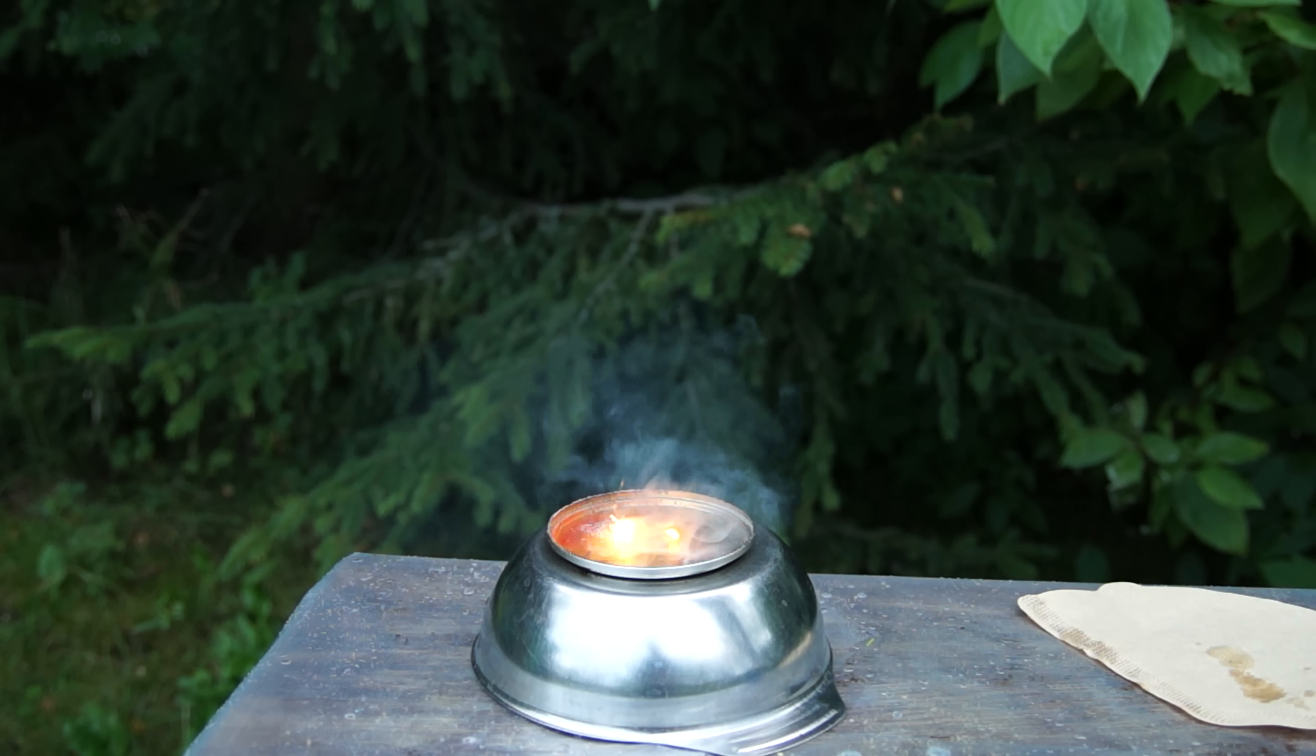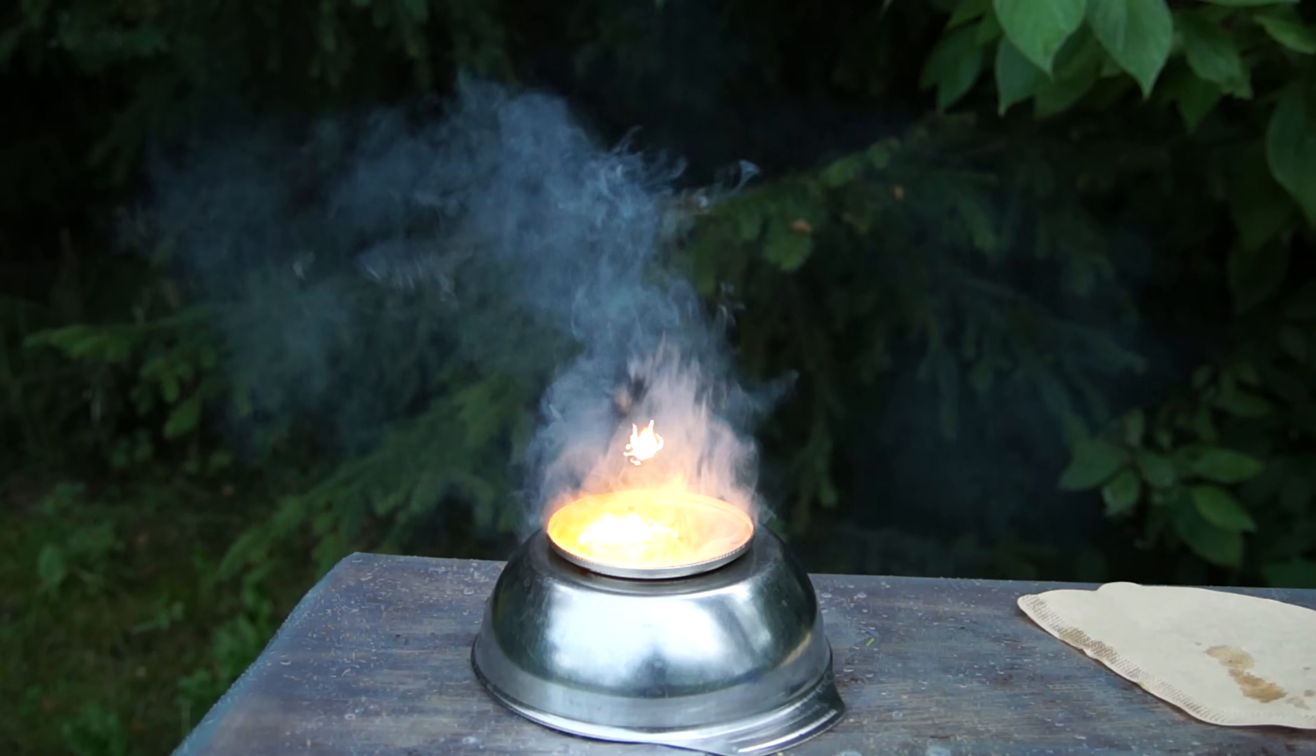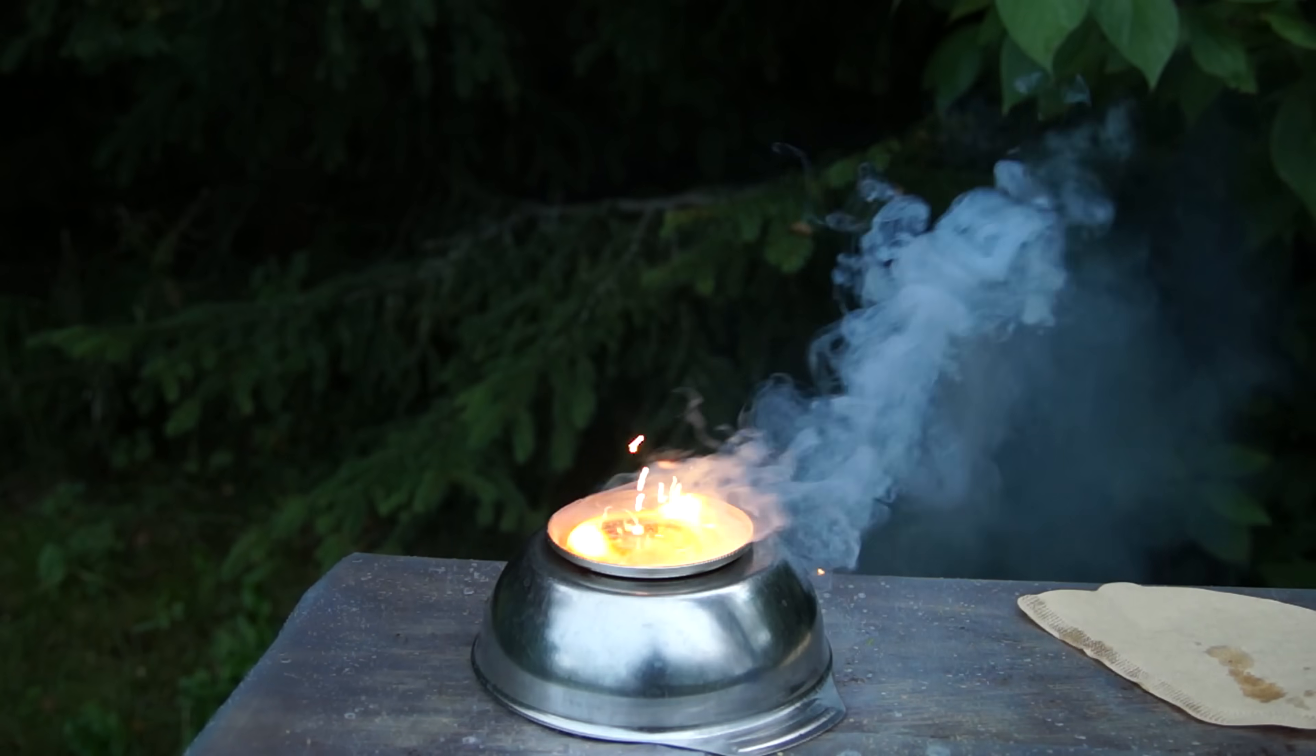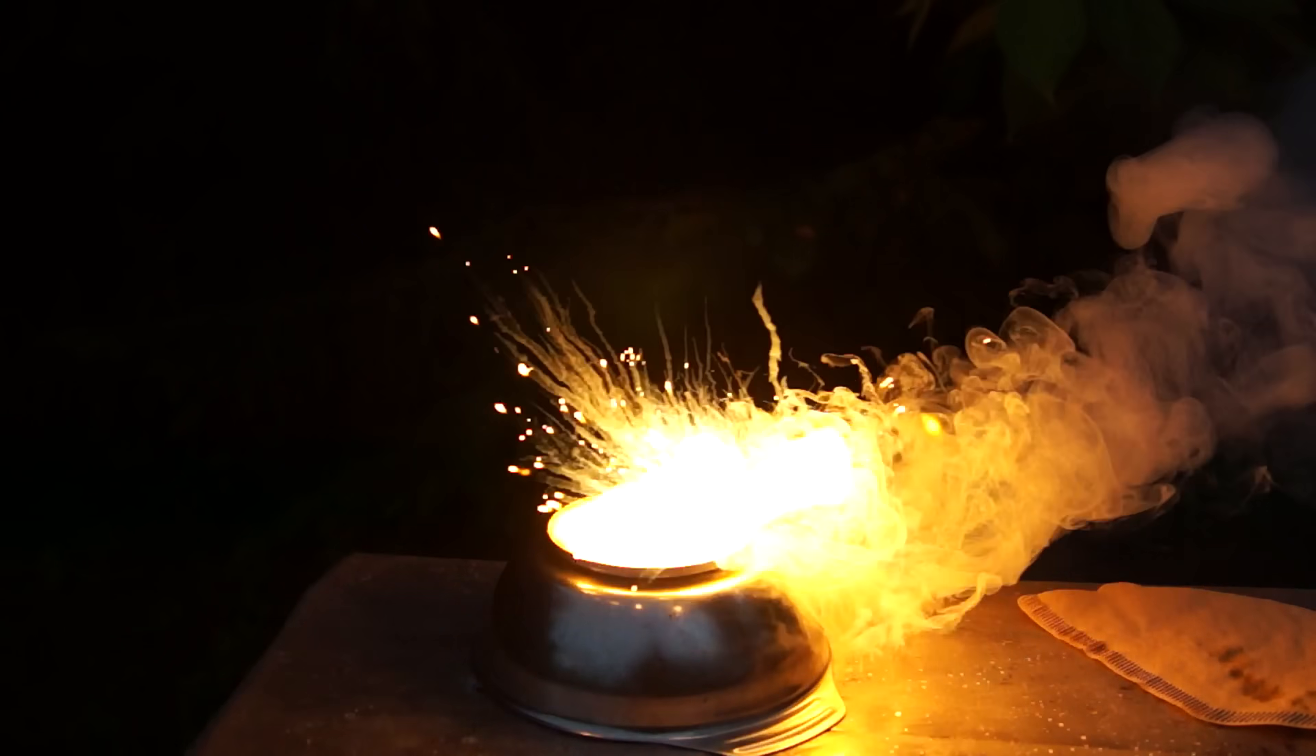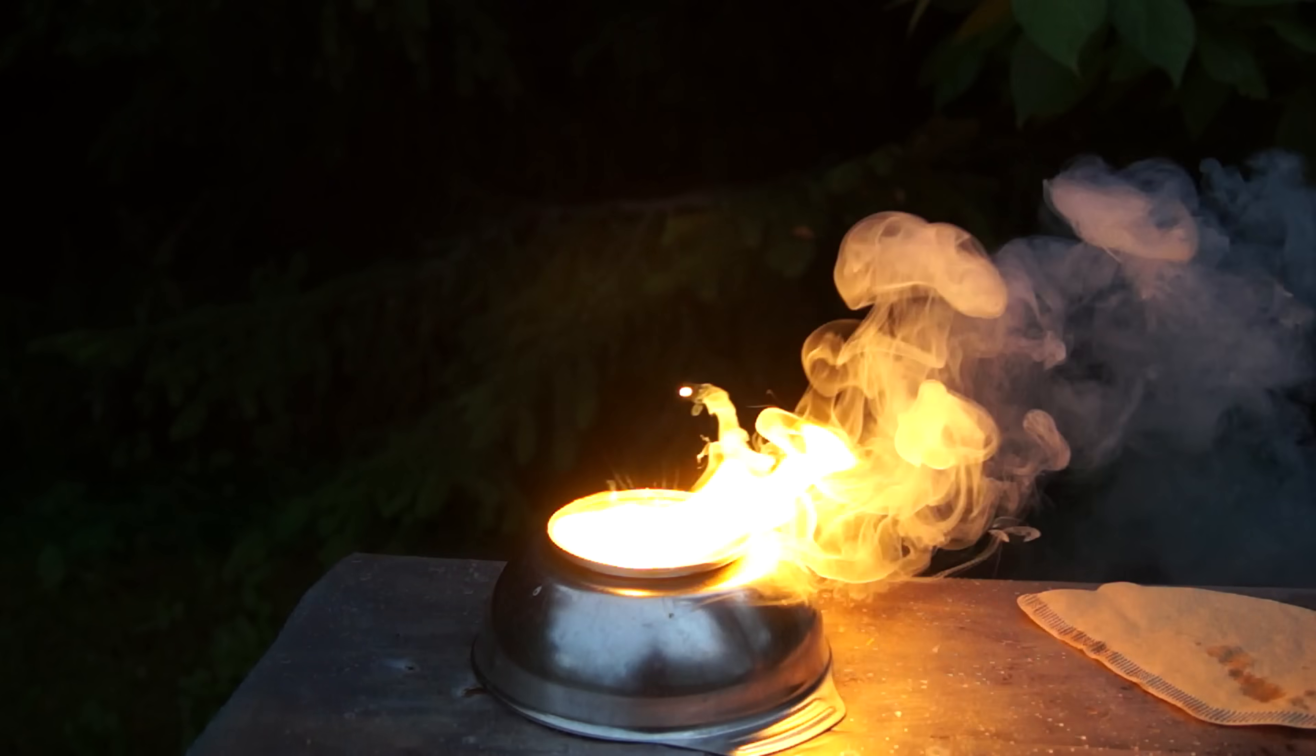White phosphorus burns on any surface, igniting everything around it. That is why people started to use it to make incendiary ammunition shells, which later got banned by the Geneva Convention.